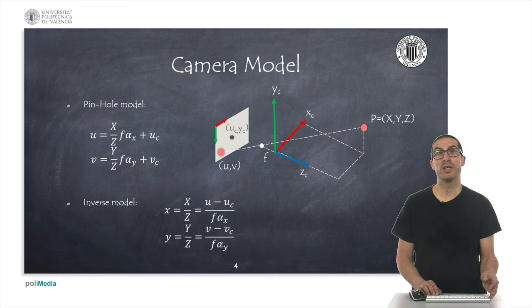This model can be used both to obtain an image point from the 3D point and vice versa. From an image point, we can obtain the x and y coordinates of a homogeneous point.